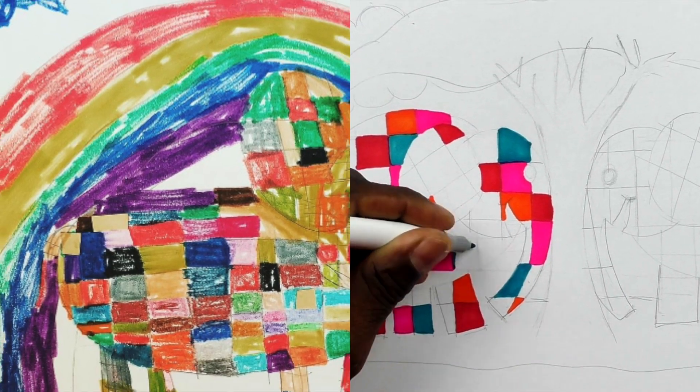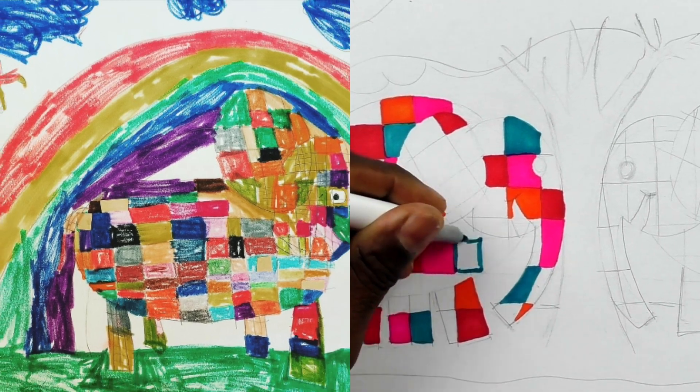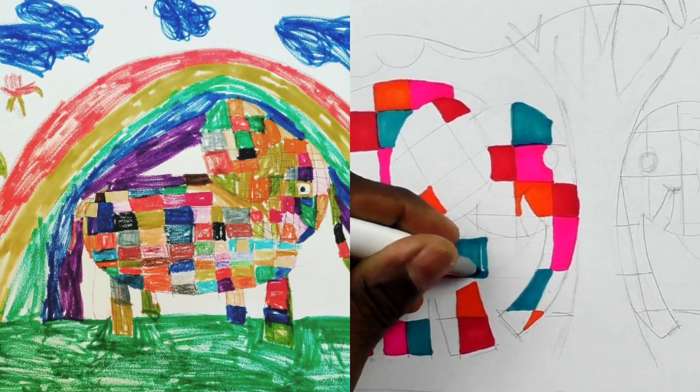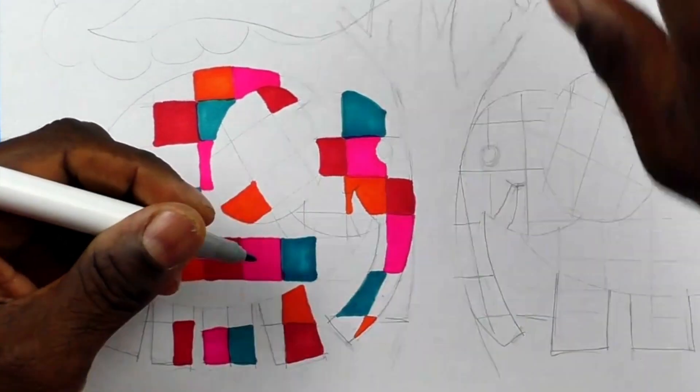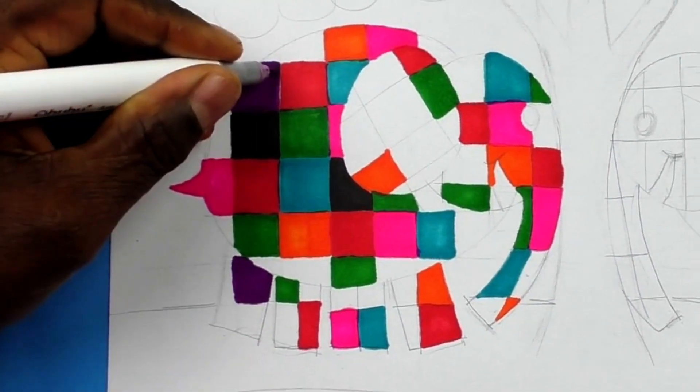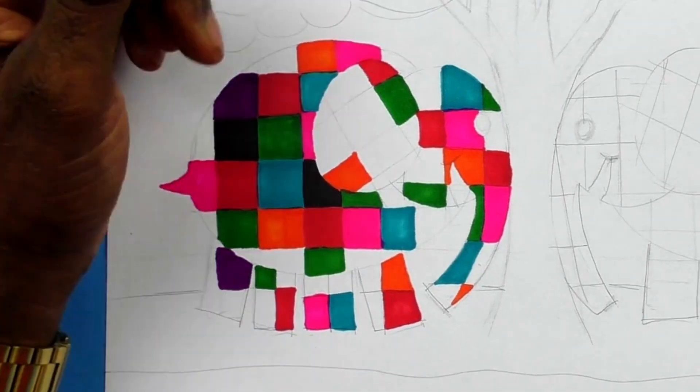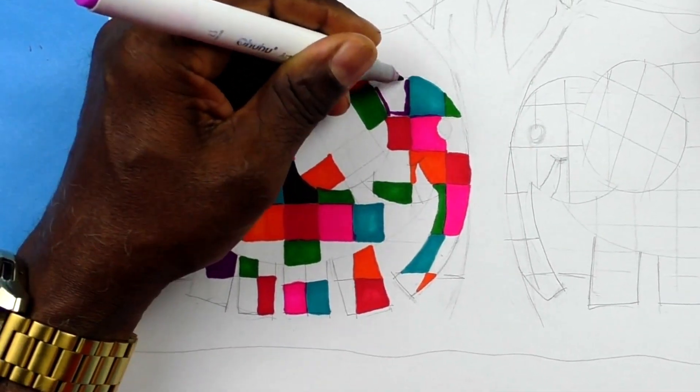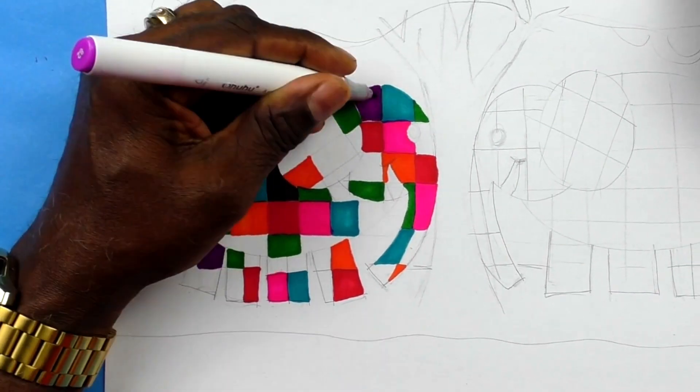Now, Wilbur also is made up of the same patchwork of squares. But, instead of having all of these different colors, Wilbur is just black and white.